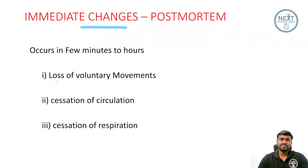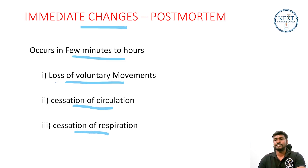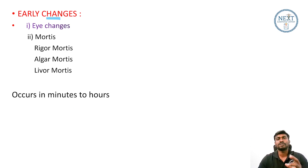Postmortem changes occur within a few minutes to hours. The immediate changes include: number one, loss of voluntary movements; number two, cessation of circulation; and number three, cessation of respiration. Remember there is a difference between immediate changes and early changes — in immediate changes we have loss of voluntary movements, cessation of circulation, and cessation of respiration.